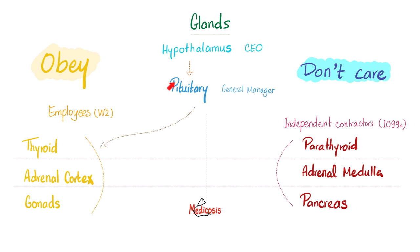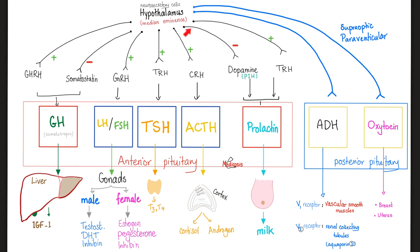The adrenal cortex listens to the pituitary via ACTH, but the adrenal medulla does not listen to the pituitary. The hypothalamus secretes corticotropin-releasing hormone (CRH), which goes to the anterior pituitary to release ACTH, which acts on the adrenal cortex — influencing cortisol from the zona fasciculata and androgens from the zona reticularis. Aldosterone from the zona glomerulosa is not under the influence of ACTH; it is under the influence of angiotensin 2 in the renin-angiotensin-aldosterone system.